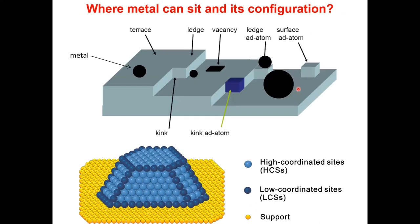Once synthesis is done, metal particles sit on the support surface. A metal particle can be on the terrace, near the ledge atom, or at the kink surface. Where the metal sits on the support surface can change the properties of the catalyst. The support shows yellow and metal particles sit on it, with high-coordinated or low-coordinated sites.